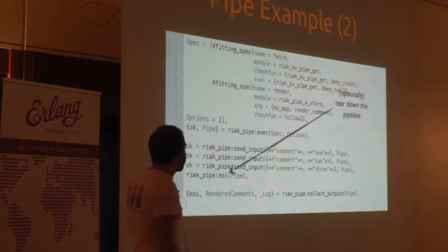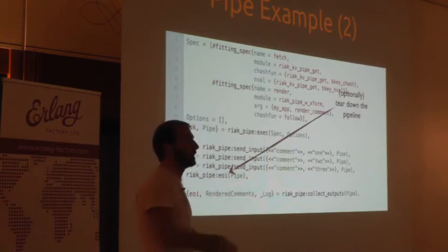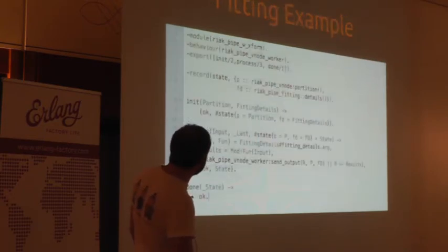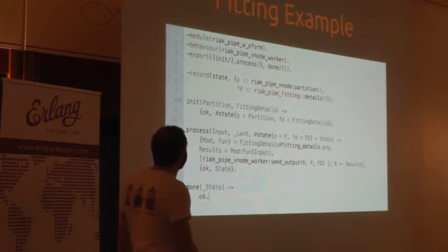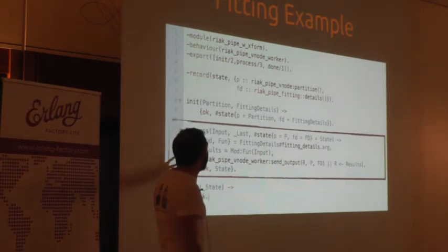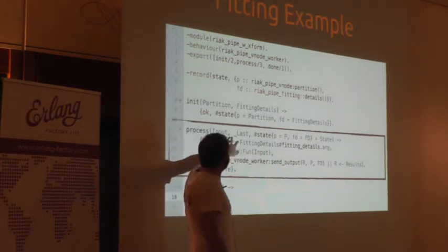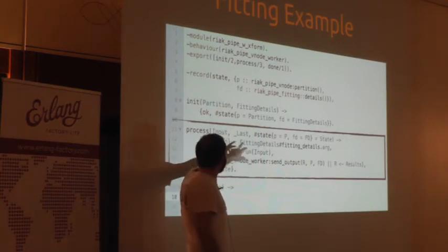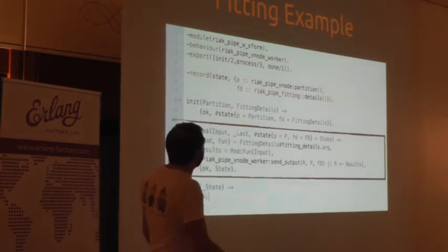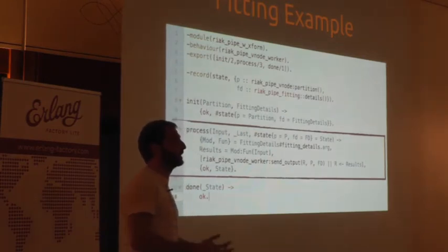Tearing down the pipe is optional — you could reuse the pipe many times. You can optionally send an EOI marker when you're done with that logic. What an actual fitting looks like: the really important bit is the process function — this is where I gather the function from my module, run it on my input, get my results, and send my results onward. At essence, that's what your fittings look like as part of your pipelining process.